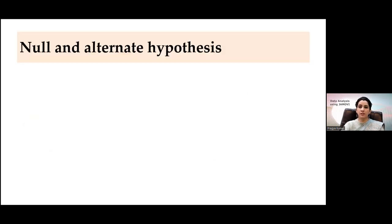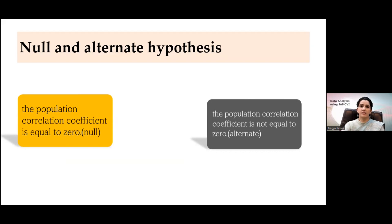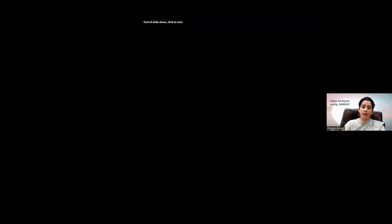Coming to the null and alternate hypothesis: the null hypothesis states that the population correlation coefficient is equal to zero — there is no association between the two variables. Through sample statistics we are telling about the population parameter, so we always talk about the population. The alternate hypothesis states that the population correlation coefficient is not equal to zero.